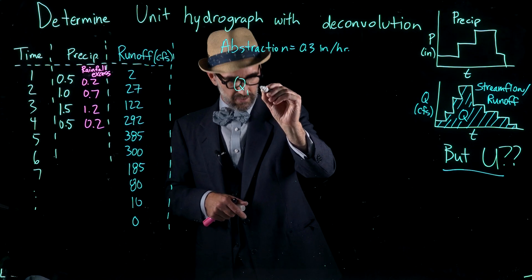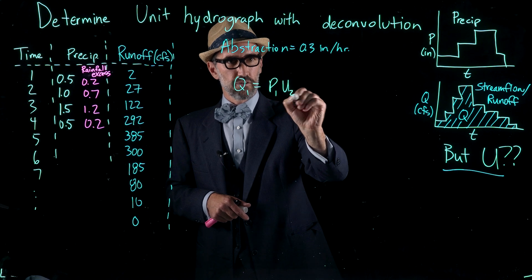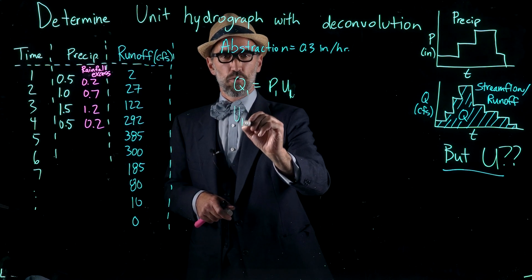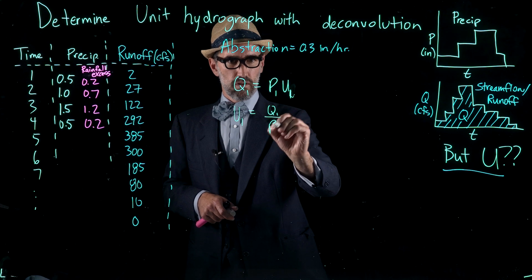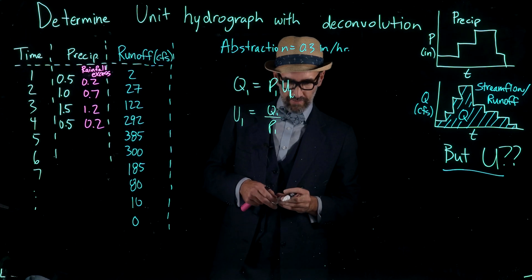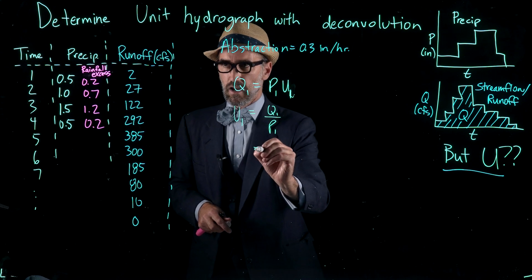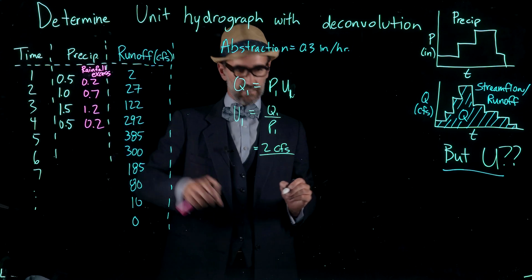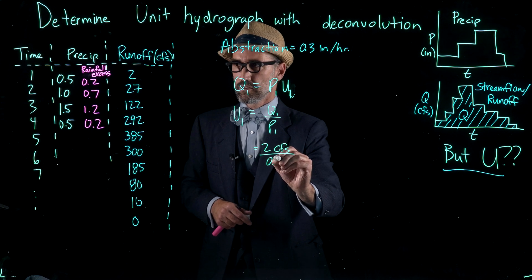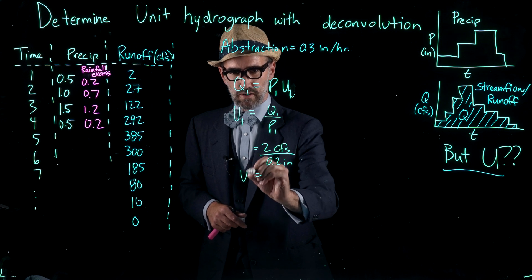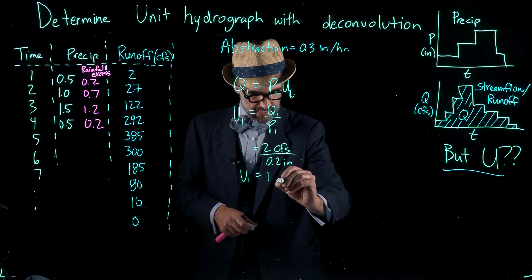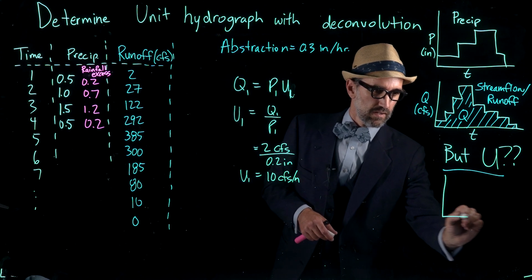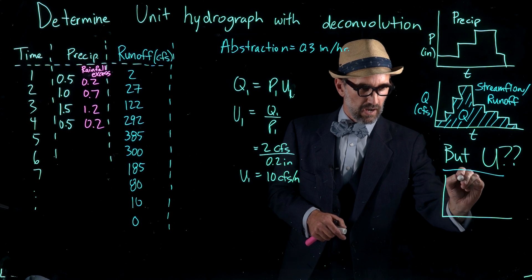So Q1, for example, is equal to P1 times U1. We can just rearrange for U1 and solve this directly, where Q1 is 2 cubic feet per second and our P1 of excess rainfall is 0.2 inches. So our U1 is equal to 10 cubic feet per second per inch. That's the first interval on the unit hydrograph.